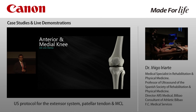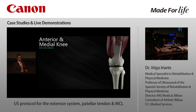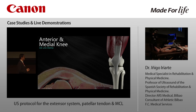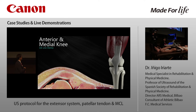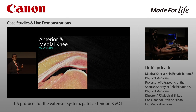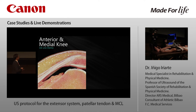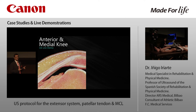In the anterior side of the knee we can find the cartilage, the distal quadriceps with the quadricipital tendon, and the patellar tendon, as we can see in this cadaveric view. The quadricipital tendon has three layers: the most superficial is formed by the rectus femoris, the intermediate by the vastus medialis and vastus lateralis, and the deep one by the vastus intermedius.